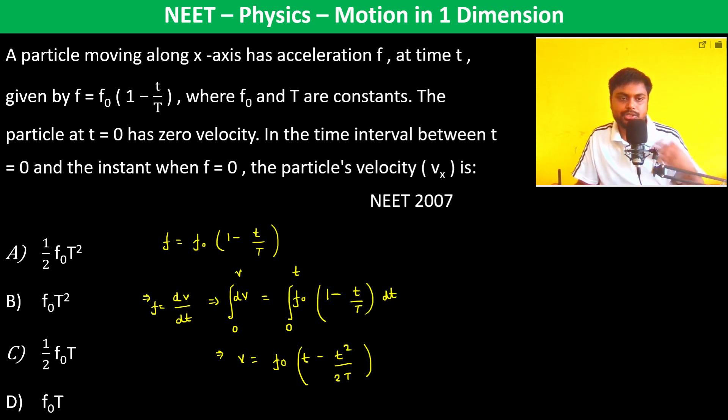In the time interval between t equal to zero and the instance when f is equal to zero. Now when f is equal to zero, f₀(1 minus t by T) should be equal to zero. So therefore 1 minus t by T equals zero, so therefore t should be equal to T.